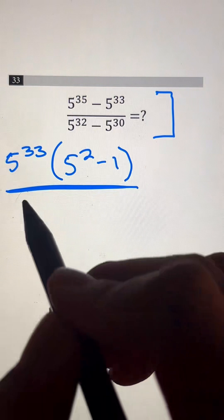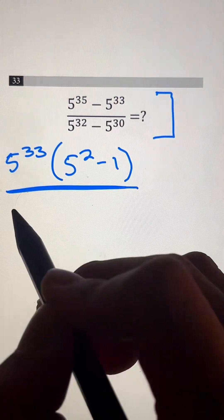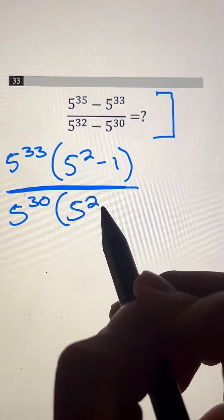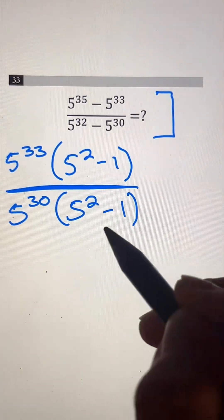And on the bottom, we apply the same thing. We factor out the greatest common factor, which will be 5 to the 30th power. On the inside, we have 5 to the 2nd minus 1 using the same reasoning as above.